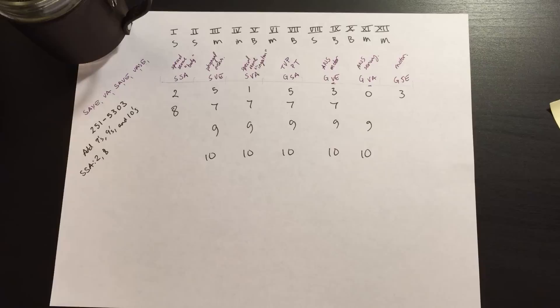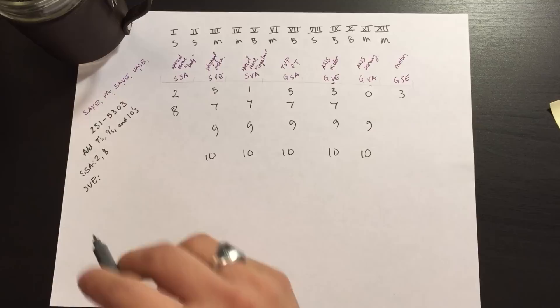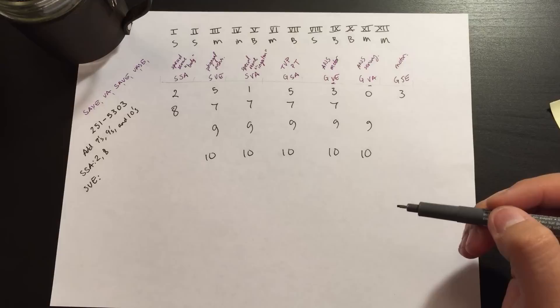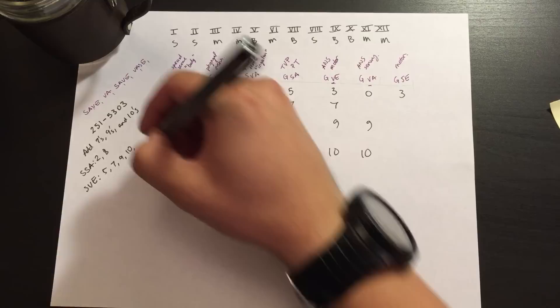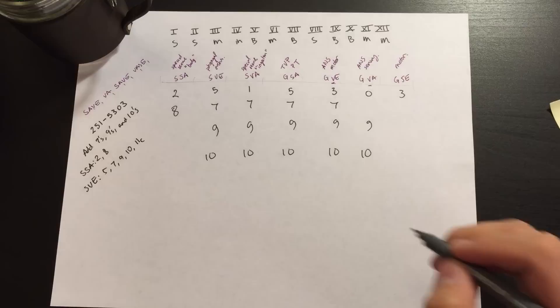Next is SVE fibers, that is our special visceral efferent and these go with pharyngeal arches. We have all but one, now the only one that is left, so I'm going to quickly write this down: it's 5, 7, 9, 10, and the last one is cranial nerve 11, the cranial portion. So right here, 11C.